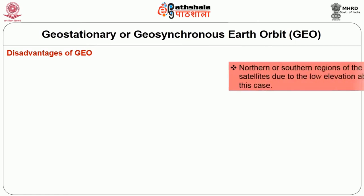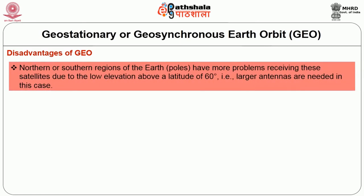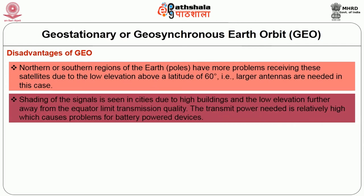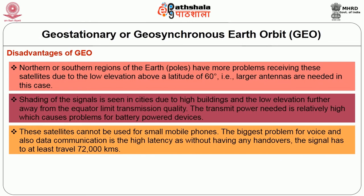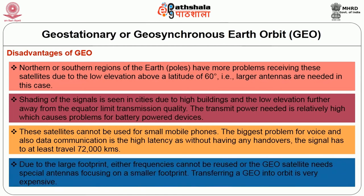Disadvantages of Geostationary Satellites: Northern or southern regions of the earth have more problems receiving these satellites due to low elevation above a latitude of 60 degrees, and larger antennas are needed. Shading of the signal is seen in cities due to high buildings, and low elevation further away from the equator limits transmission quality. The transmit power needed is relatively high, causing problems for battery-powered devices, and these satellites cannot be used for small mobile phones. The biggest problem for voice and data communication is high latency, as the signal has to travel at least 72,000 km. Transferring a GEO satellite into orbit is also very expensive.